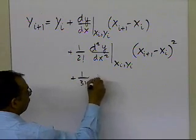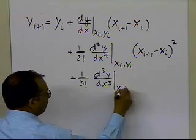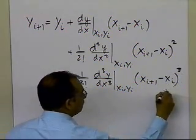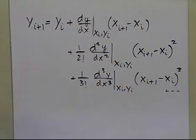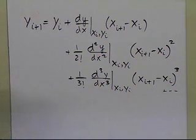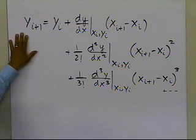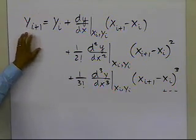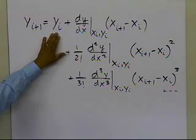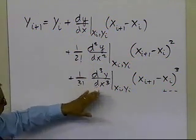Continuing the Taylor series, we add the third derivative of y with respect to x, evaluated at x_i, y_i, times the cube of the difference between the point you are going to and the point you are coming from. So the Taylor series tells you the value of y at x_i+1 if you know y at x_i, the derivative at x_i, the second derivative, the third derivative, and so on.